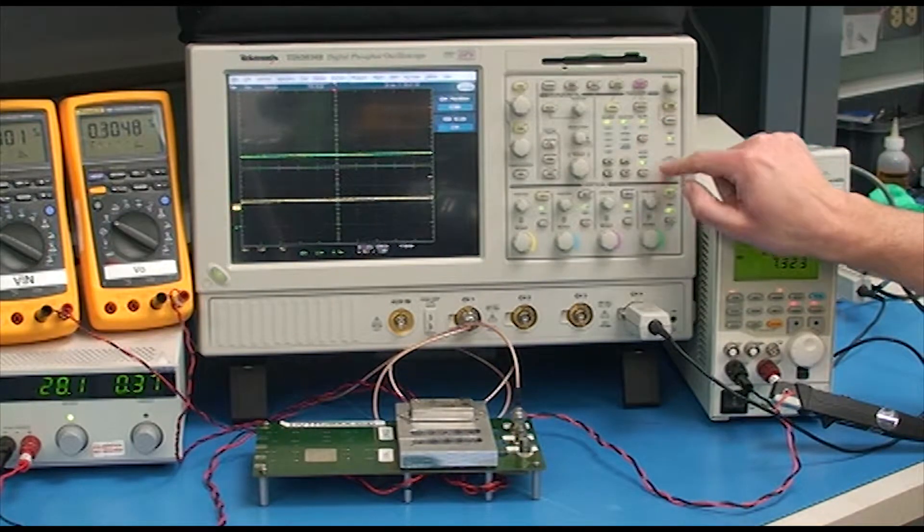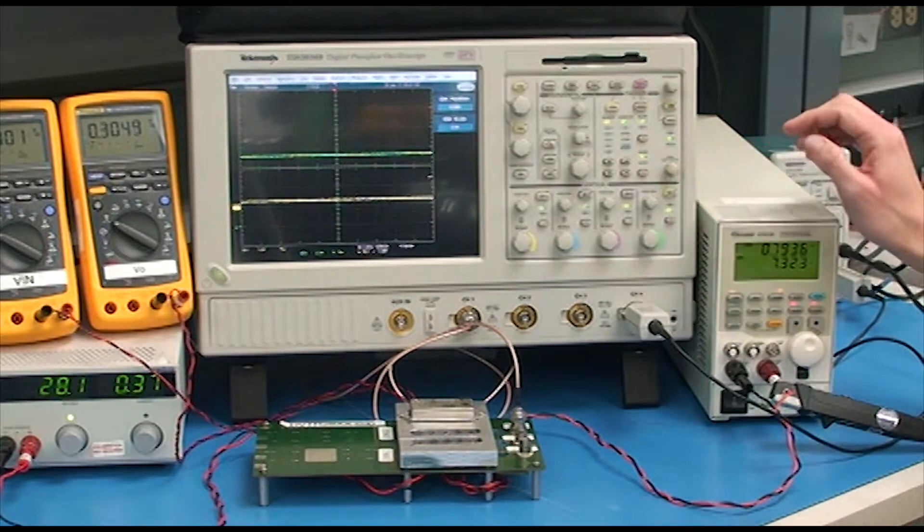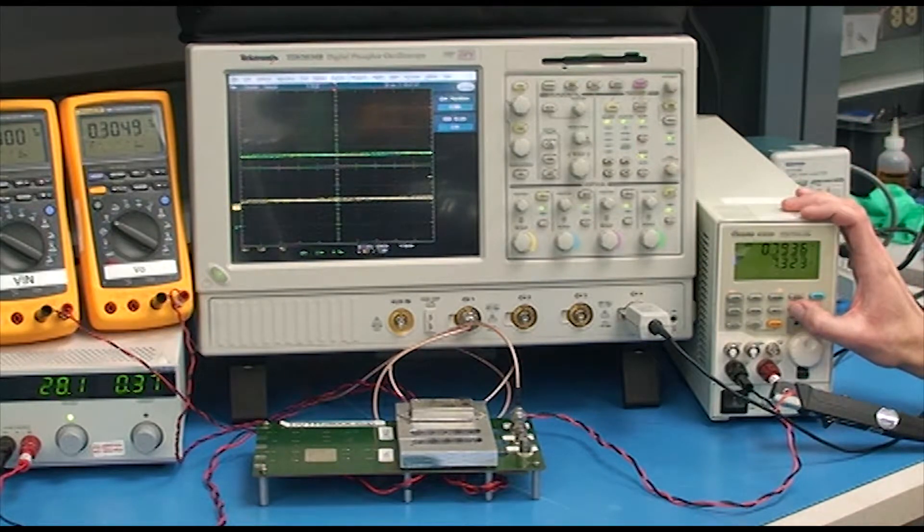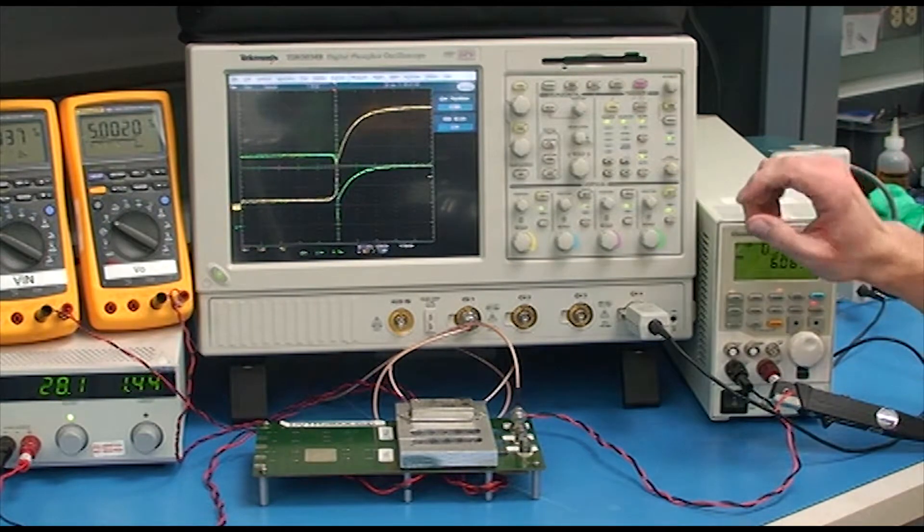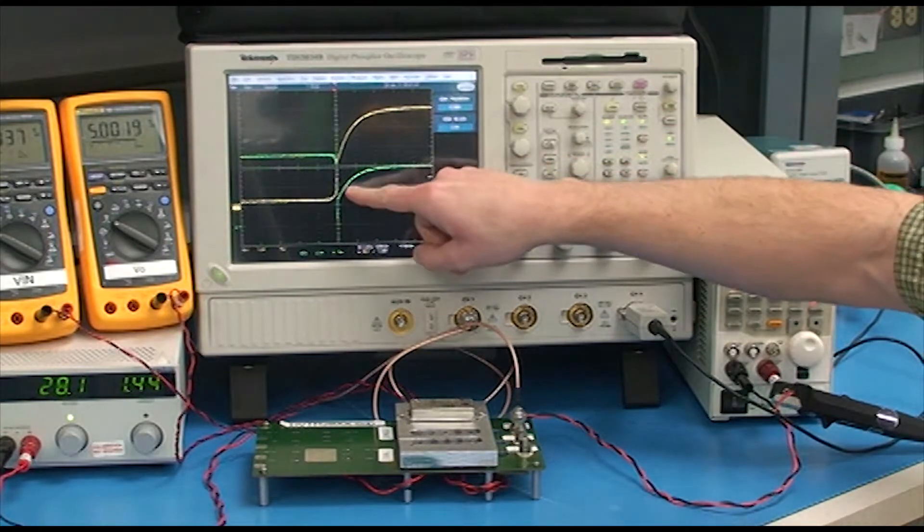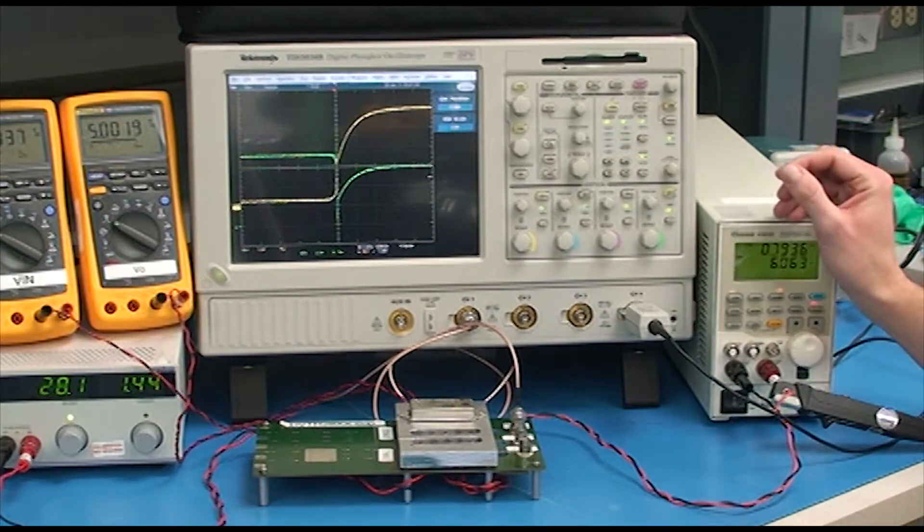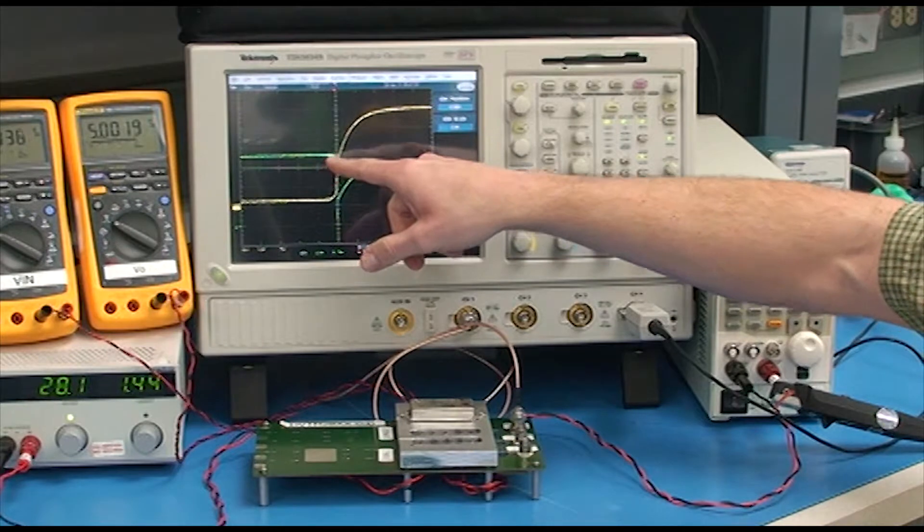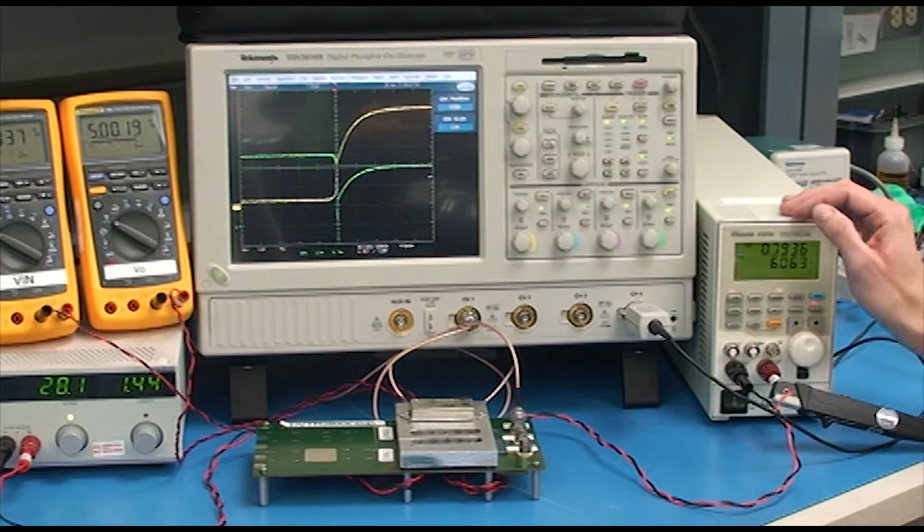Now, I can change the setup of the scope. When I release the short circuit, the output voltage soft starts with no overshoot and the output current goes back to full load.